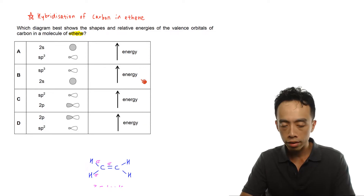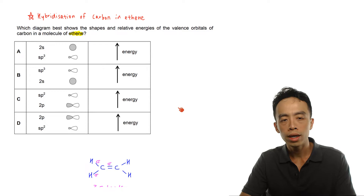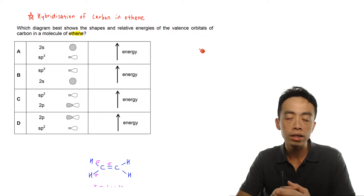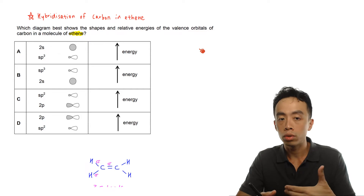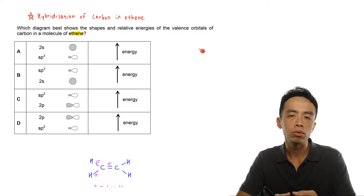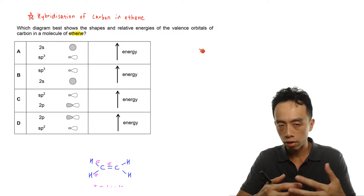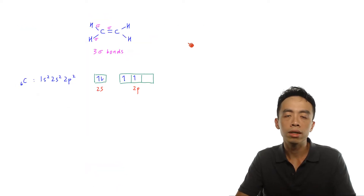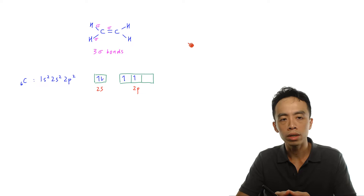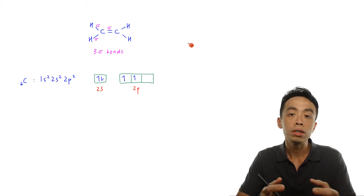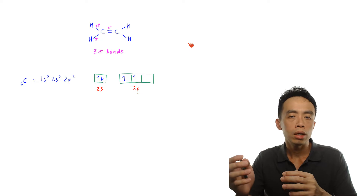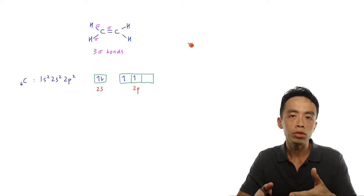We have a few permutations here which we will have to go through. Let us consider a molecule of ethene and think about what the valence orbitals of a carbon in ethene would be like and what will happen to their relative energies. We will have to introduce the concept of hybridization. Hybridization is the mixing of orbitals to form a certain number of hybridized orbitals, which are subsequently used to form sigma bonds. Hybridization explains the formation of sigma bonds.